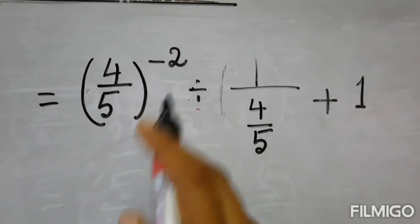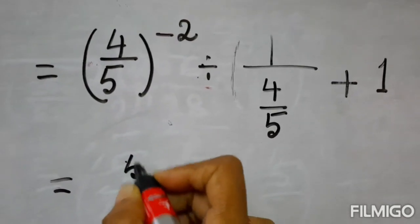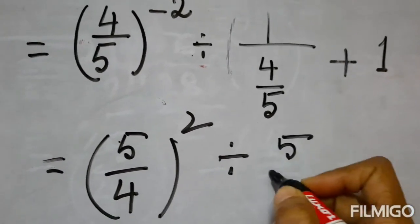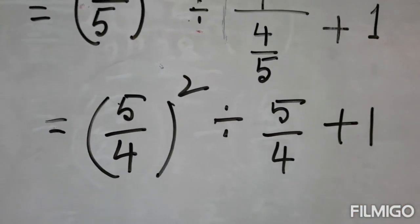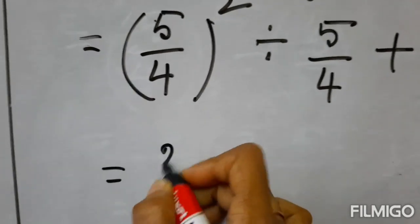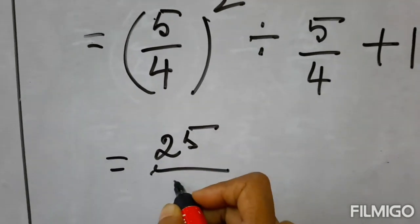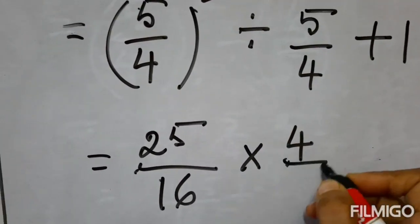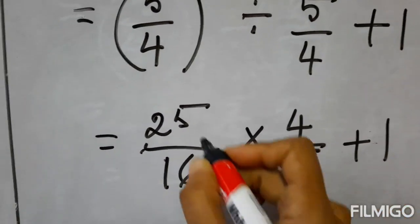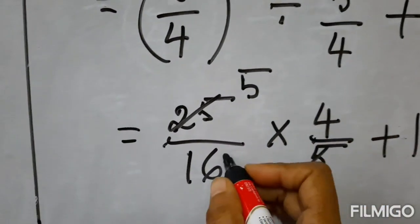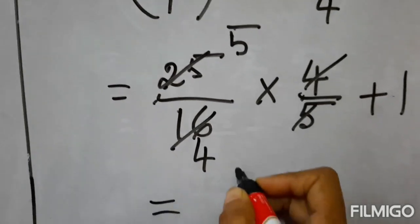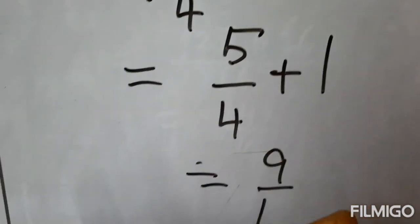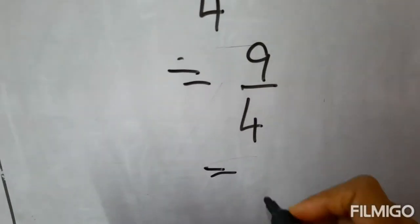To make the power positive we take the inverse of the base: 5 by 4 squared, divided by 1 by 4 by 5 which is 5 by 4, plus 1. Then 25 by 16 divided by 5 by 4, plus 1. We take the inverse because division becomes multiplication: 25 by 16 multiplied by 4 by 5, plus 1. 25 and 5 get reduced, 4 and 16 get reduced, giving 5 by 4 plus 1.